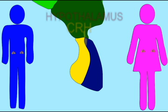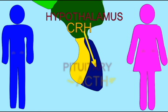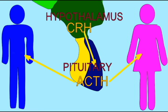The hypothalamus produces the hormone CRH, corticotropin-releasing hormone, and also a second one known as AVP, vasopressin. This hormone travels to the pituitary gland through a portal system of veins and stimulates the adrenal cortex to release adrenocorticotropic hormone, ACTH.